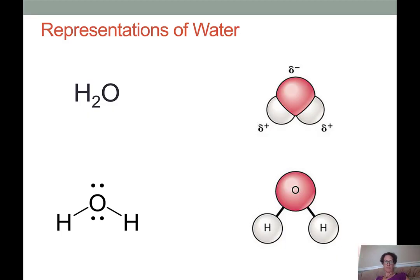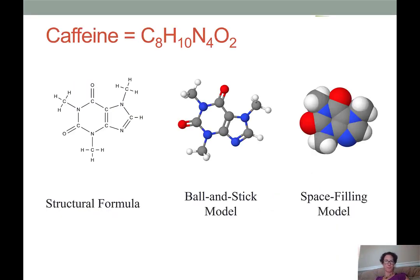So here are four ways in which we can represent water. Let's look at a more complex example to see how these different depictions can be useful in describing a piece of matter. Our next example is caffeine, which has a symbolic formula of C8H10N4O2.